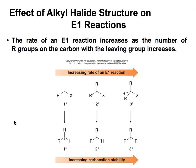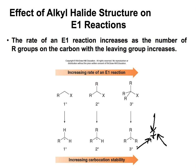The degree of substitution of the alkyl halide is very important in E1 reactions. Primary alkyl halides will form a very unstable carbocation, but a tertiary alkyl halide, where the halogen is connected to a tertiary carbon, will form a very stable tertiary carbocation. Alkyl groups donate electron density, so those three R groups donate electrons to the positive charge.